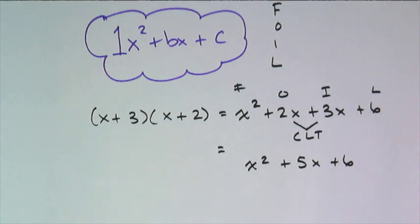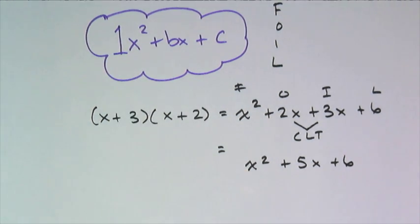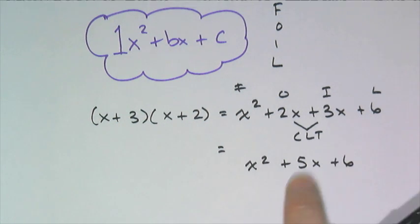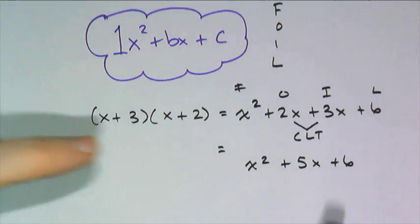And every single quadratic trinomial that has a leading coefficient of 1 that's factorable to begin with has a multiplication process like this that gives you that polynomial. And so the way to undo the multiplication is to do what you did in class last time with the fill-in-the-blank part of that fill-in-the-blank activity.